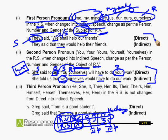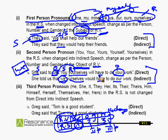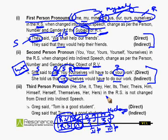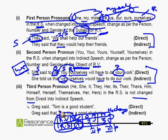When first person is given in the reported speech, it always takes the subject of the reporting verb. When second person is given, it always takes the object of the reporting verb. Coming to third person — 'he', 'she', 'it', 'they', 'her', 'its' — there is no change. For example: 'Greg said, Tom is a good student' → 'Greg said that Tom was a good student.' Tom is not changed.